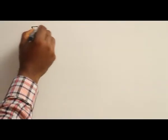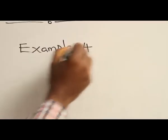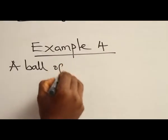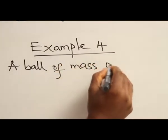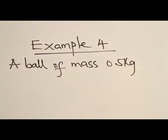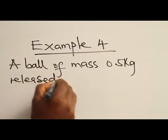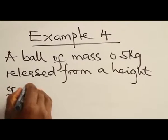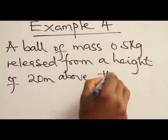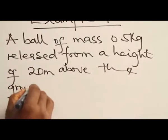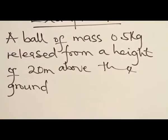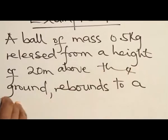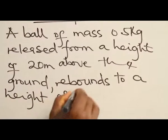Example 4. A ball of mass 0.5 kg released from a height of 20 meters above the ground rebounds to a height of 5 meters.